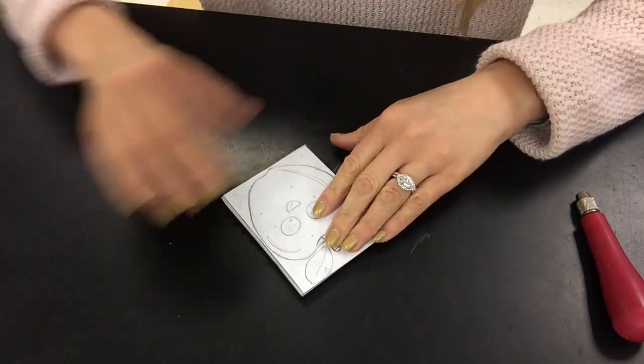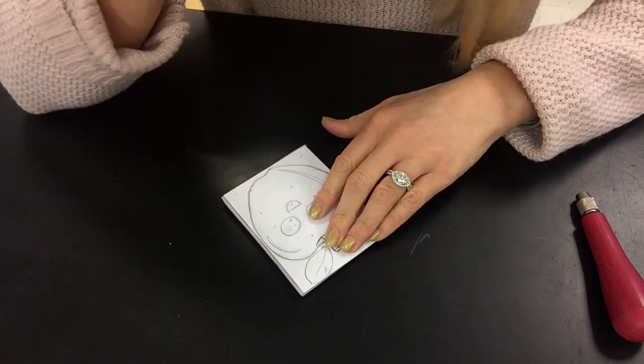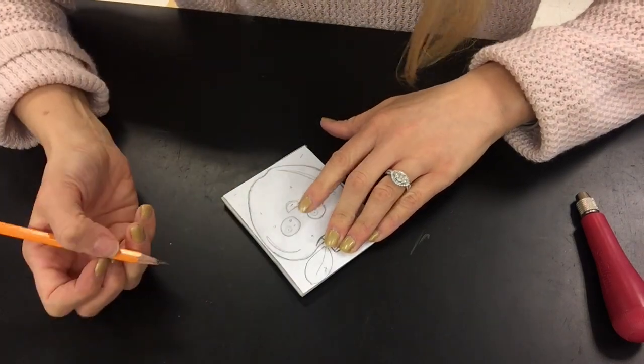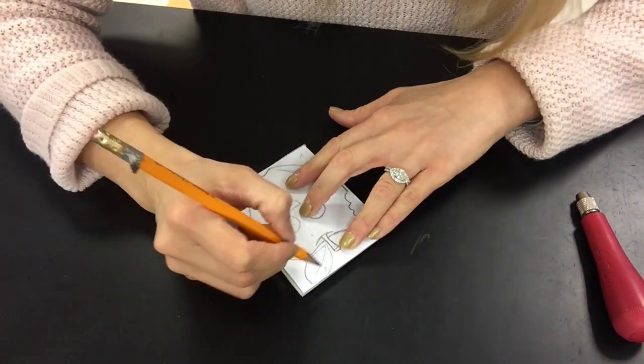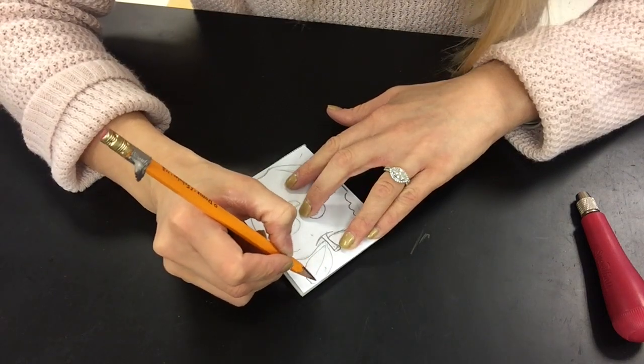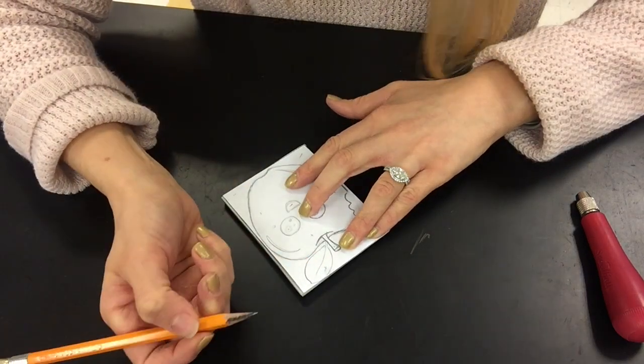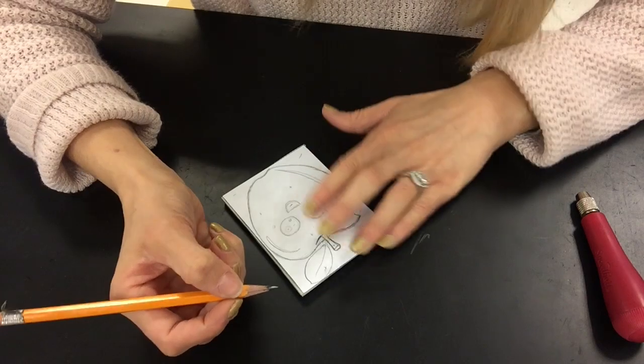So I'm very carefully going to set it back down, keeping it aligned. I'm going to take my pencil. You don't want to push too hard, but you do want to go over all of your lines. If you need to go over top of the tape, that's fine. Pretend like the tape isn't even there at this point.